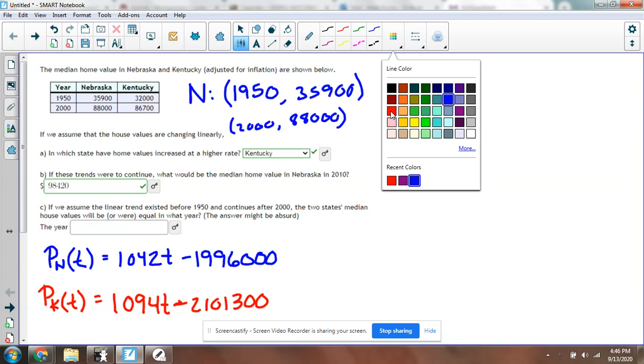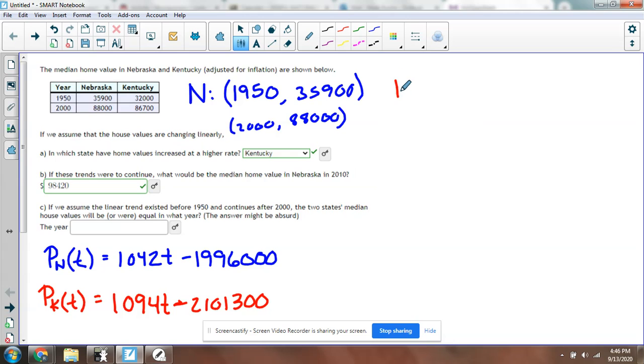I do the same thing with Kentucky. I have two coordinates: (1950, 32,000) and (2000, 86,700).